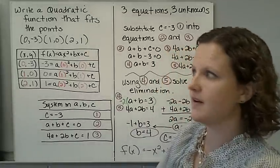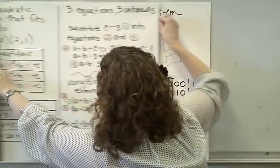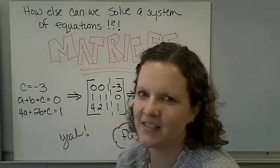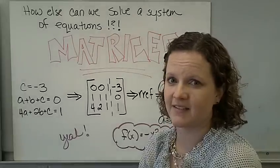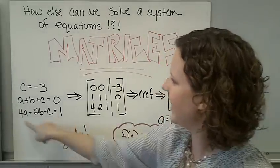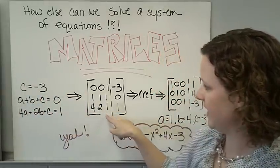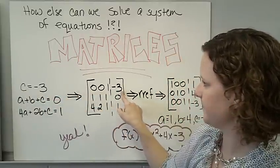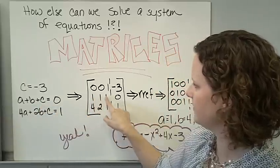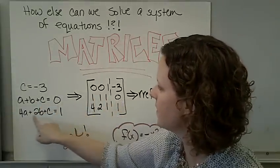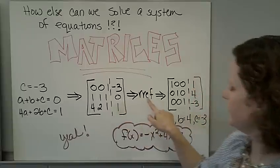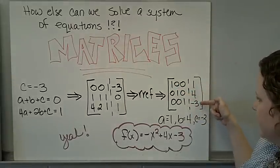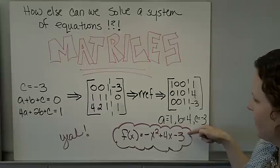One more thing to show you, and it's actually very cool. How else can we solve a system of equations? Matrices. We're going to solve the system using matrices — remember RREF in your calculator. Using the system from the last example, change it into an augmented matrix. The first row is 0, 0, 1 because there's no A or B term. The second row coefficients are 1, 1, 1 with answer 0. The third row coefficients are 4, 2, 1 with answer 1. Put it into your calculator, hit RREF, and you get the identity matrix giving you A, B, and C — the exact same answer, but with less pencil being used.